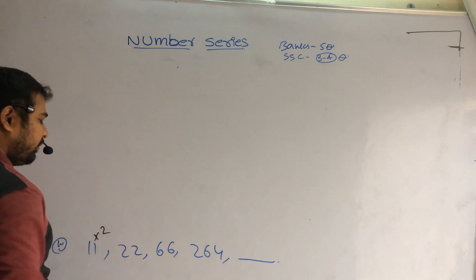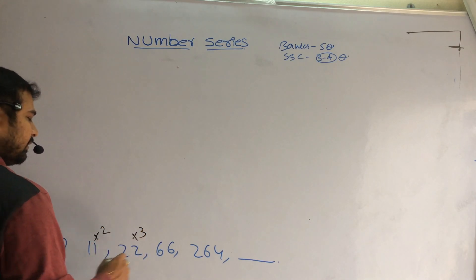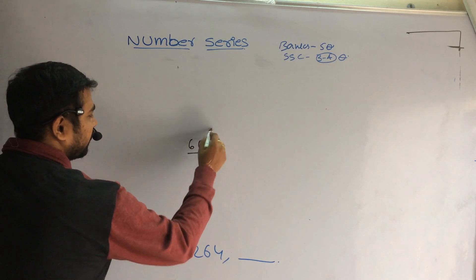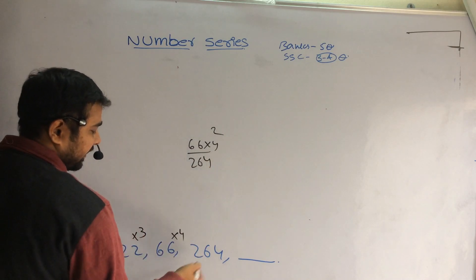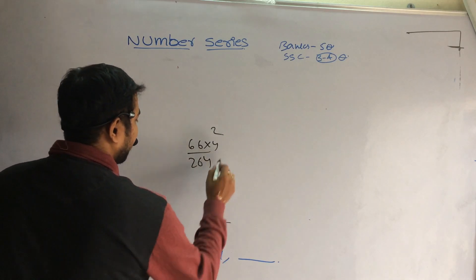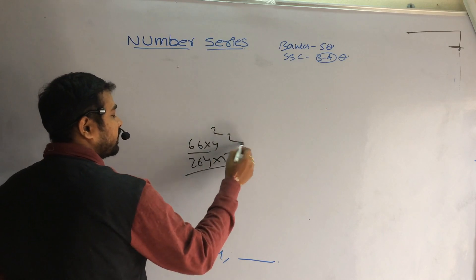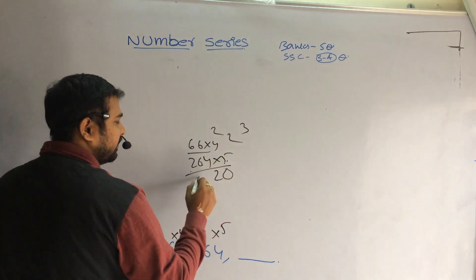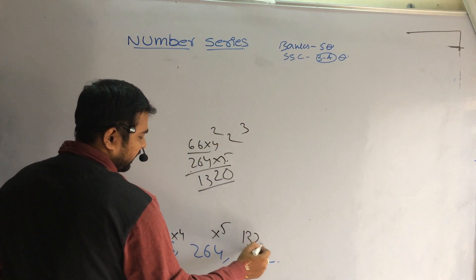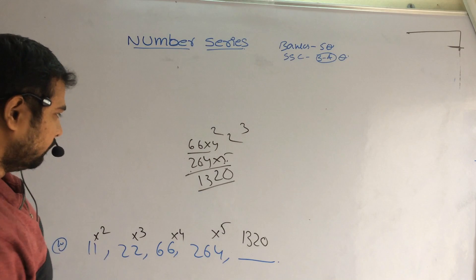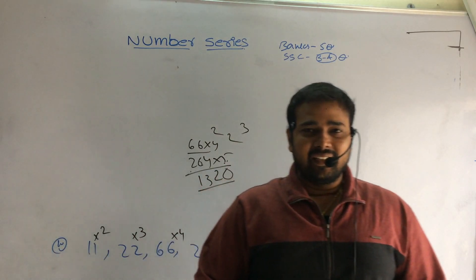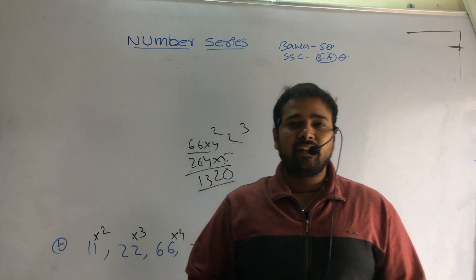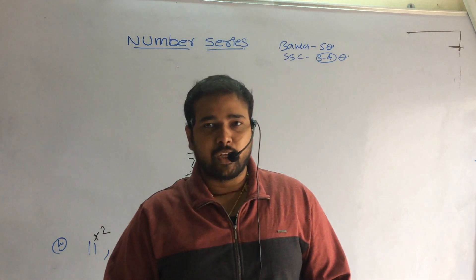Next one. Here differences are abnormal. 11 2's are 22, 22 3's are 66, 66 4's are 264, and next into 5: 5 4's are 20, 6 5's are 30 plus 2 is 32, 5 2's are 10 plus 3, so the answer is 330. So friends, please like, share, and subscribe to my channel. Thank you.